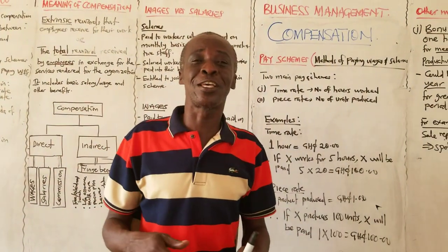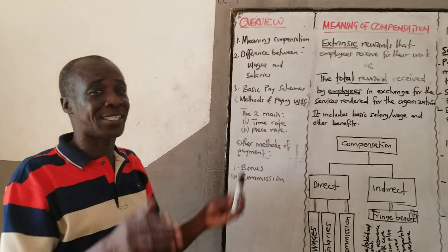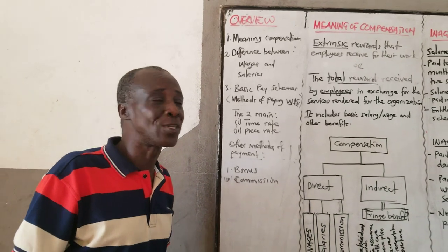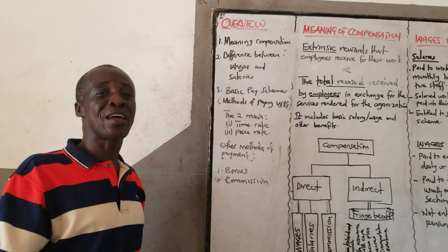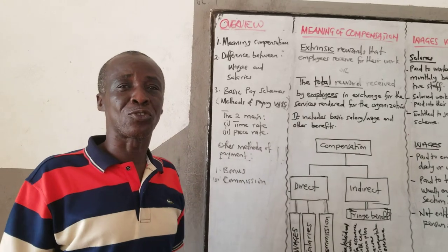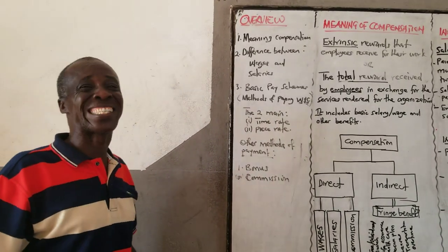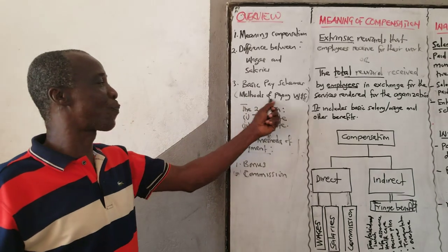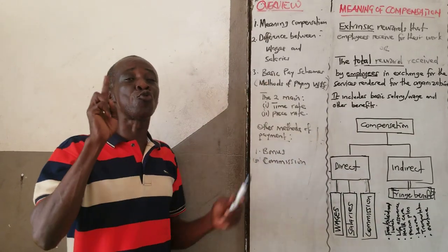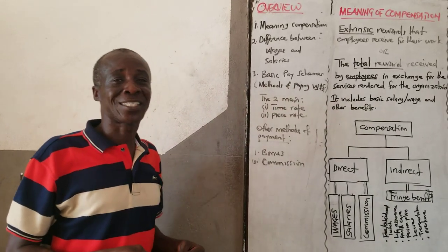Compensation. What does it mean when you say you have compensated somebody? So by the time we are through with today's lesson, as an overview, this is what we are going to cover. The meaning of compensation - when you say compensation, what is it? Then you have been hearing of wages and also of salaries. What is the difference between the two? We will look at some basic pay schemes, the method of paying wages and salaries. We will look at the two main basic pay schemes: the time rate and piece rate.